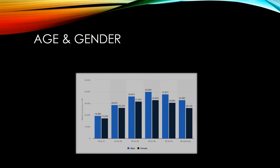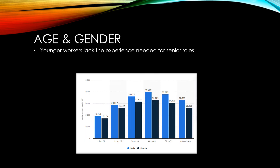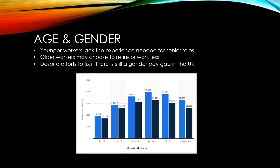This chart shows the median wage in the UK by both age and gender. In terms of age, younger workers get paid less because they lack the experience needed for senior roles. Older workers start to drop off in their average wage rates because some may choose to retire or work less. It may surprise you to know that the gender pay gap is still a real thing in the UK. Median wages for women lag behind median wages for men, and this gap increases for higher-paying roles, where underrepresentation of women in the most prestigious and highest-paying jobs means there is still a more significant gap.